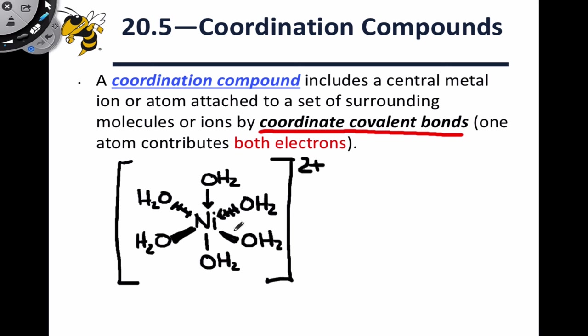So you'll often see these drawn with arrows pointing to the metal atom, indicating that both electrons are coming from the non-metal atom. This particular complex is pretty famous for appearing green. So when nickel-2 finds itself in aqueous solution, we end up with a green solution.